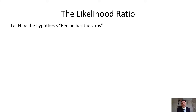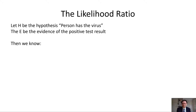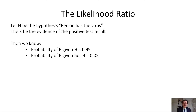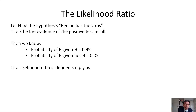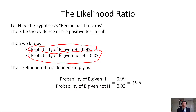Let H be the hypothesis that the person has the virus — this is the hypothesis whose probability is unknown and for which we want to know how much the evidence tells us. The evidence E in this case is the positive test result. The probability of E given H is 0.99, because the probability that we would get a positive test result if the person has the virus is 99%. The probability of E given not H — the probability of getting that evidence if the person doesn't have the virus — is 0.02, because that's the false positive rate of 2%. The likelihood ratio is simply defined as the ratio: probability of E given H divided by probability of E given not H. So in this case, that's 0.99 divided by 0.02, which is 49.5 — approximately a likelihood ratio of 50.